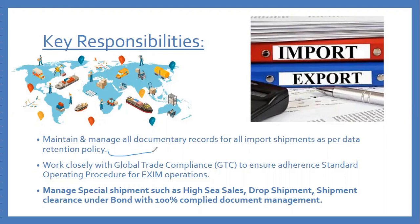We have to follow whatever policy the company has set. For any shipment we import, all related documents must be maintained and managed as per record. Step by step we need to follow the instructions — starting from the proforma invoice, we save it in the particular shipment folder, then the purchase order, then the commercial invoice, packing list, and other shipping documents like the shipping bill — all saved to that particular drive.